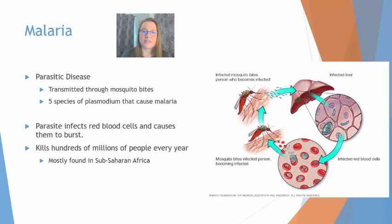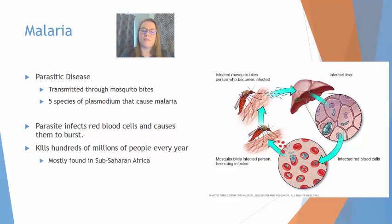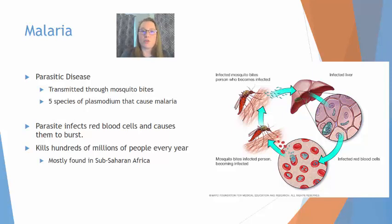Malaria is a parasitic disease transferred through mosquito bites. The parasite infects the blood of the host; mosquitoes suck the blood of organisms and then accidentally deposit that parasite into a new host. The parasite infects red blood cells, causing them to burst, and leads to a host of serious issues. It kills hundreds of millions of people every year — mostly in sub-Saharan Africa — and due to global inequities there is not as much funding directed at malaria as there would be if it were affecting developed regions, which is a significant environmental justice issue.